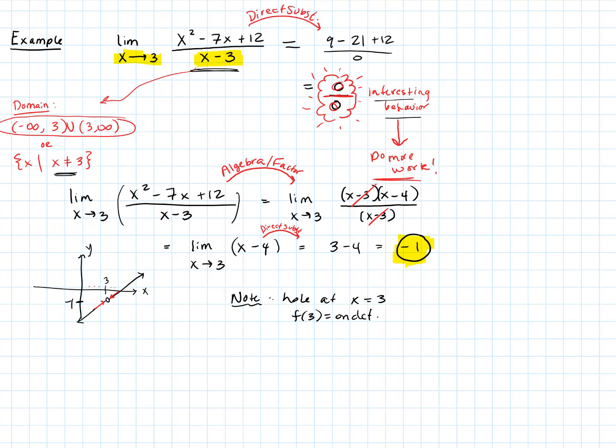While the function didn't exist at that point, it did have a limit. Graphically, this function is equivalent to the linear function y equals x minus 4, but it has a hole at 3 — writing it as a rational function instead of as the simple linear function created that hole. I'm going to pause the video here so you can freeze this frame and take a look at this example.